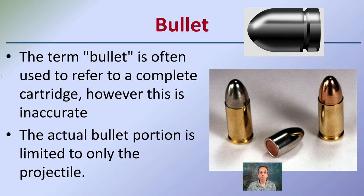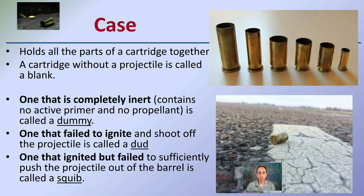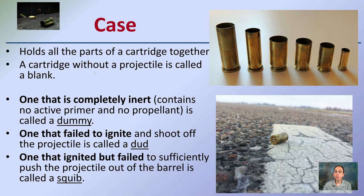The bullet specifically is typically referred to as the end point. When we're looking at a bullet, the actual bullet portion is limited only to what we call the projectile. A lot of times people call the entire cartridge the bullet — that's inaccurate. The bullet is only that projectile portion. The case holds all the parts of the cartridge together.